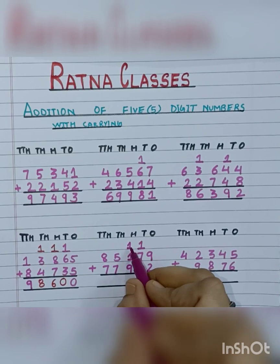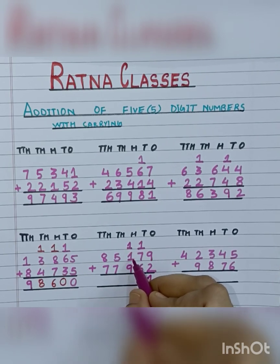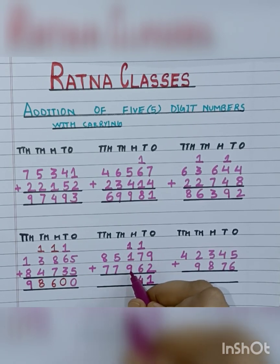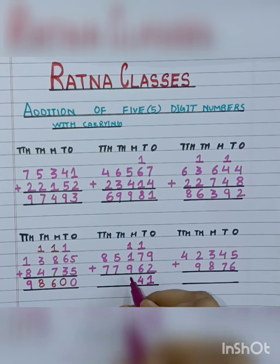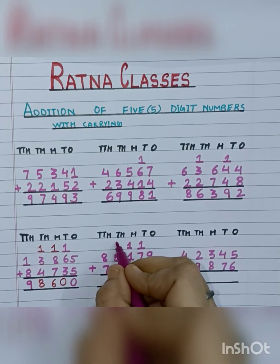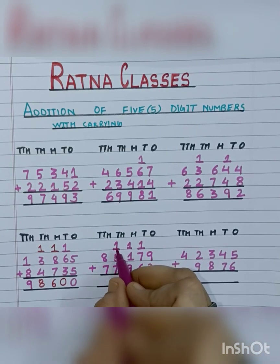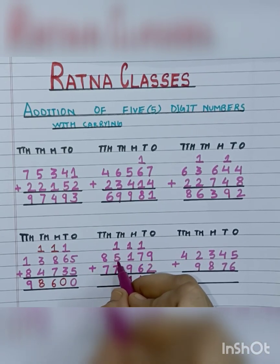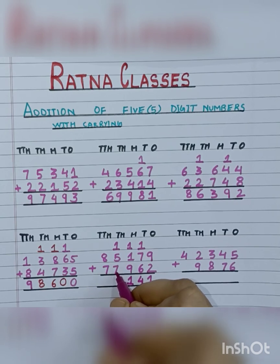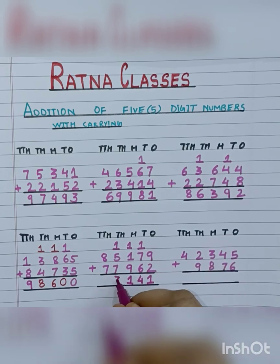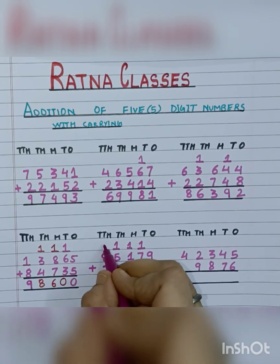Now 1 carry plus 1 is 2, and 2 plus 9 is 11 — so we will write 1 here and take 1 carry. Now 1 carry plus 5 is 6, and 6 plus 7 is 13. So we will write 3 here and carry 1.